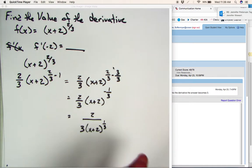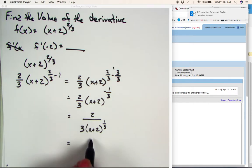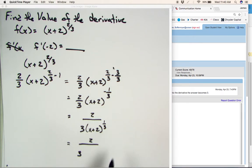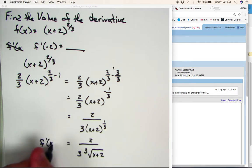Now, to rewrite this even further, 2 over 3. Now, the 1 third exponent simply means you're taking the cube root. So this would be the cube root of x plus 2. And that would be f prime of x. That would be your derivative.